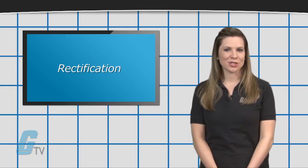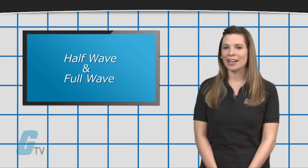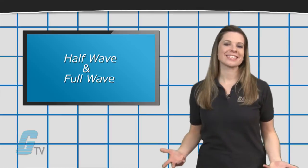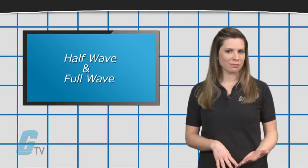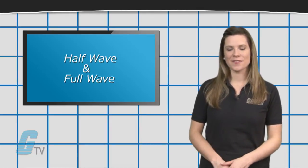Two types of rectification circuits are half wave and full wave. For this example, I will be using these terms as they apply in single phase.